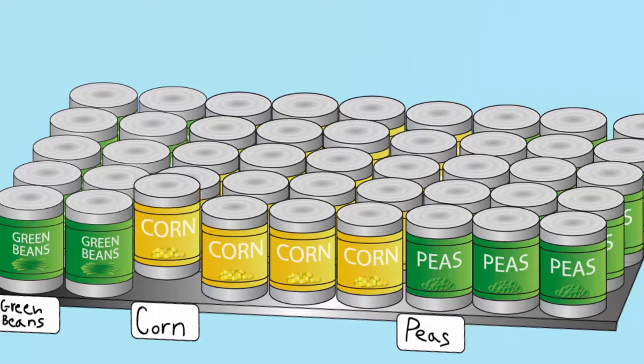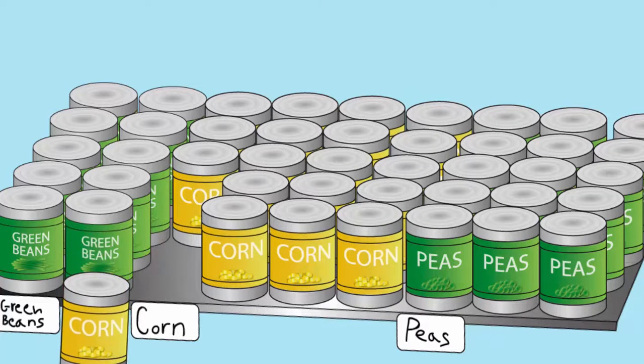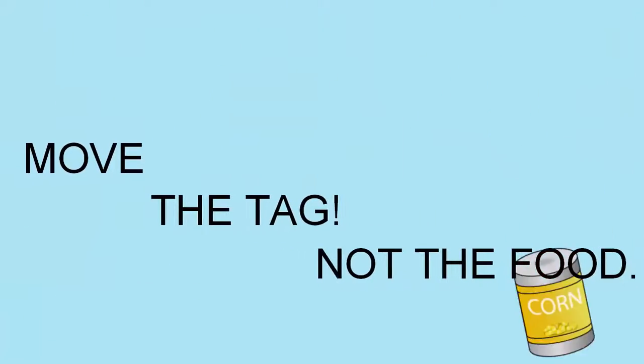So column rotation is an easy way to rotate your food without a lot of effort. So remember, move the tag, not the food.